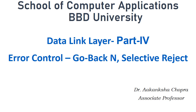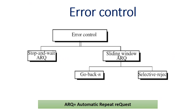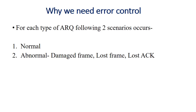This video will be talking about error control with various protocols like Go-Back-N, Selective Reject, and Stop and Wait ARQ, that is Automatic Repeat Request. For sliding window protocol, we can have Go-Back-N method and Selective Reject method.